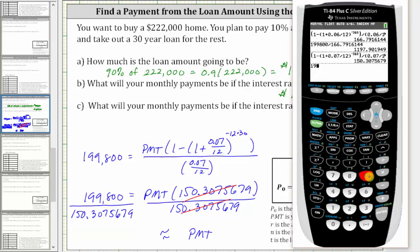We have 199,800 divided by 150.3075679. To the nearest cent, if the interest rate is seven percent, the monthly payment is now $1,329.27.